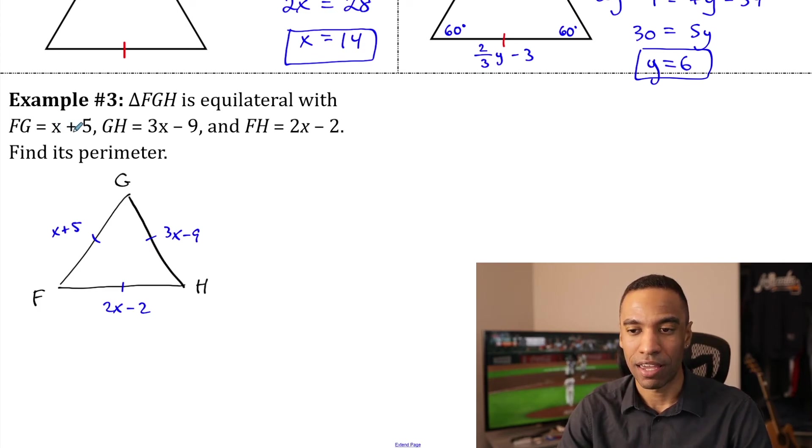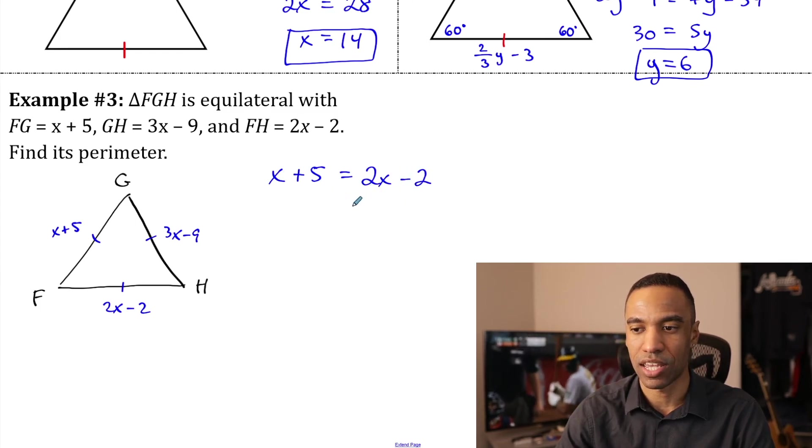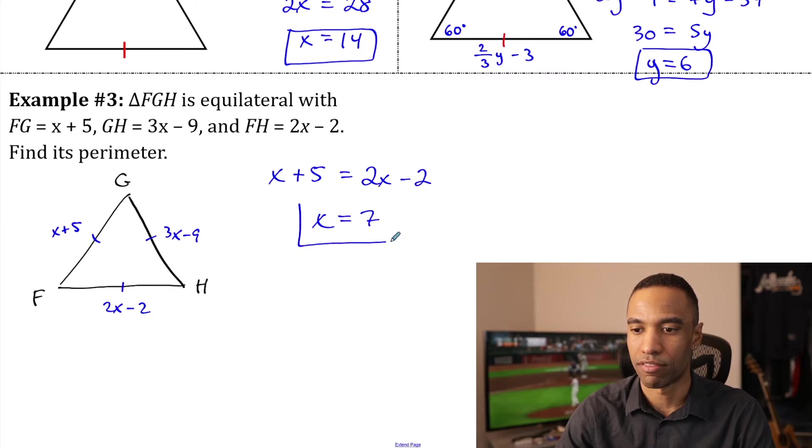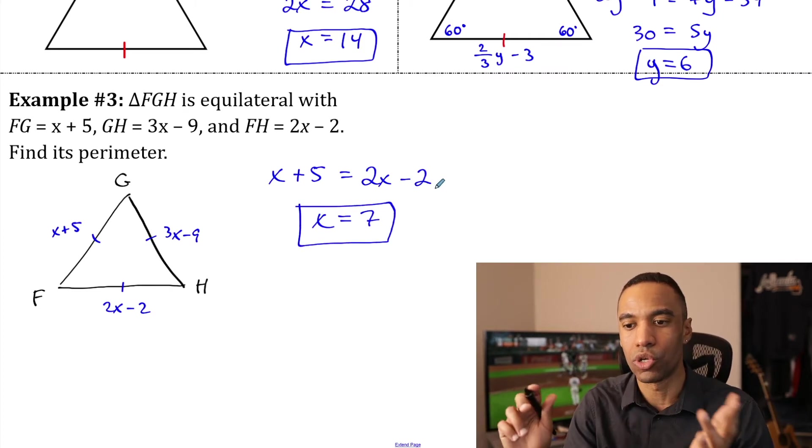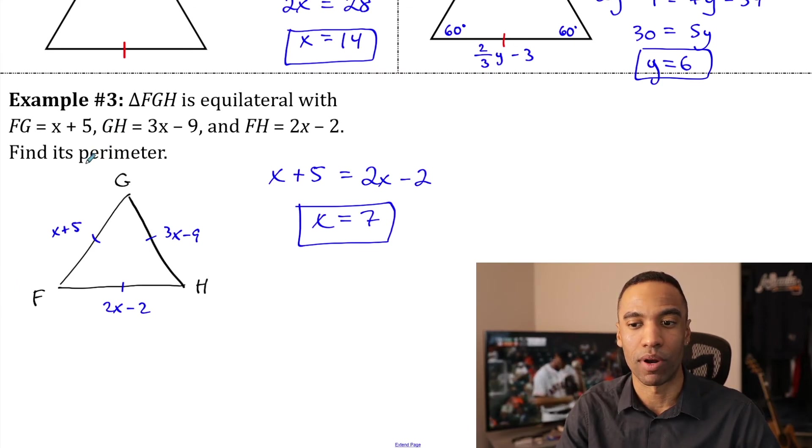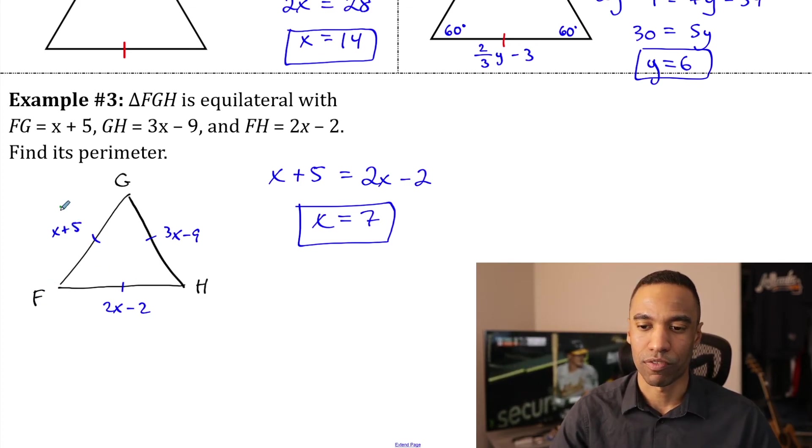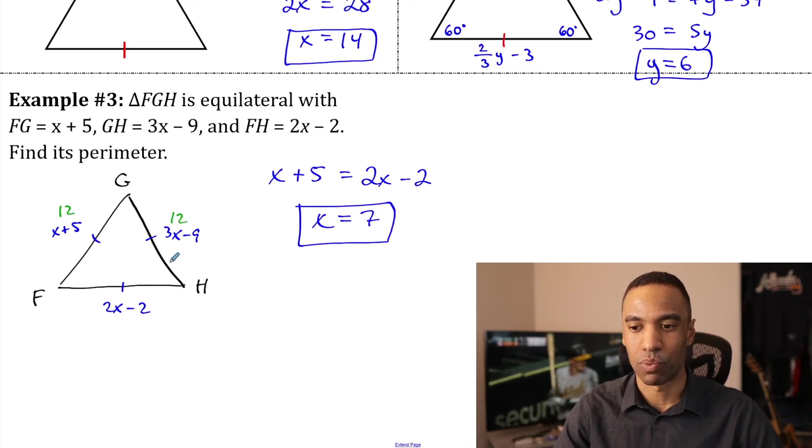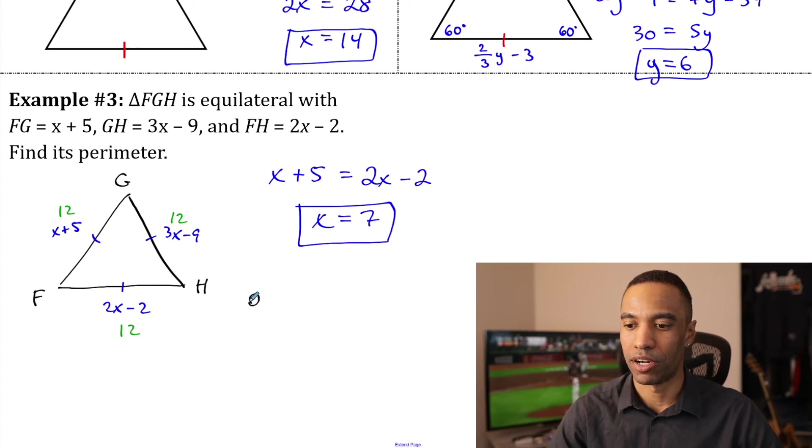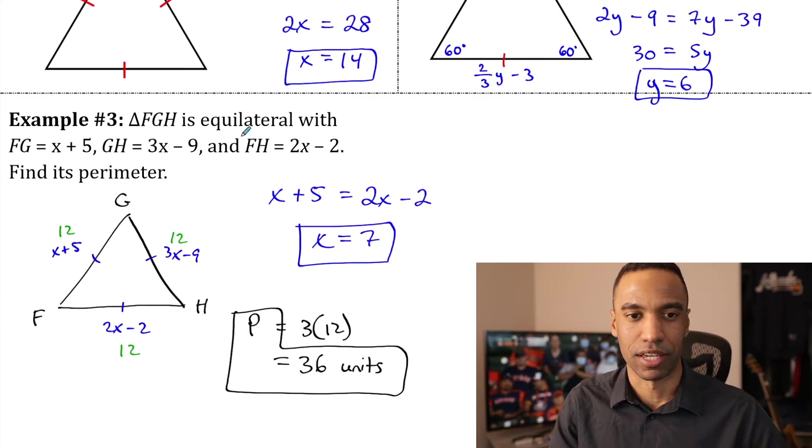But anyway, X plus 5 and 2X minus 2, those sound good. Why don't we set those equal to each other? X plus 5 equals 2X minus 2. So, if I subtract X and add 2 to both sides there, I'll be getting X equals 7. So, hopefully no matter what you do on any of these problems, you still end up just getting X equals 7. So, X equals 7, no matter what you want to do here, we still got to find the perimeter though. So, we got to find out the perimeter of this thing is going to be adding up all of these lengths. So, 7 plus 5 is 12. 21 minus 9 is 12. I'm just confirming this. And 14 minus 2 is 12. So, the perimeter here is going to be three times 12, which is 36 units. And I'm all satisfied there. There's perimeter. That is the answer.